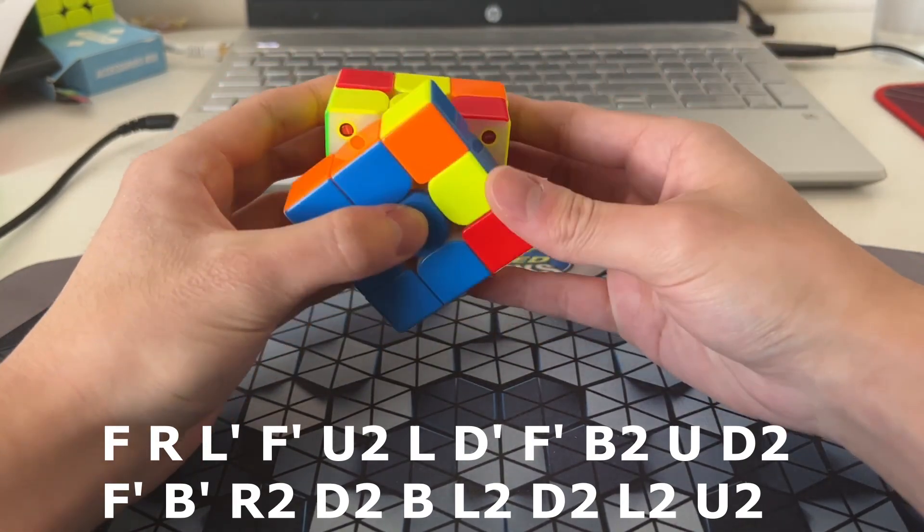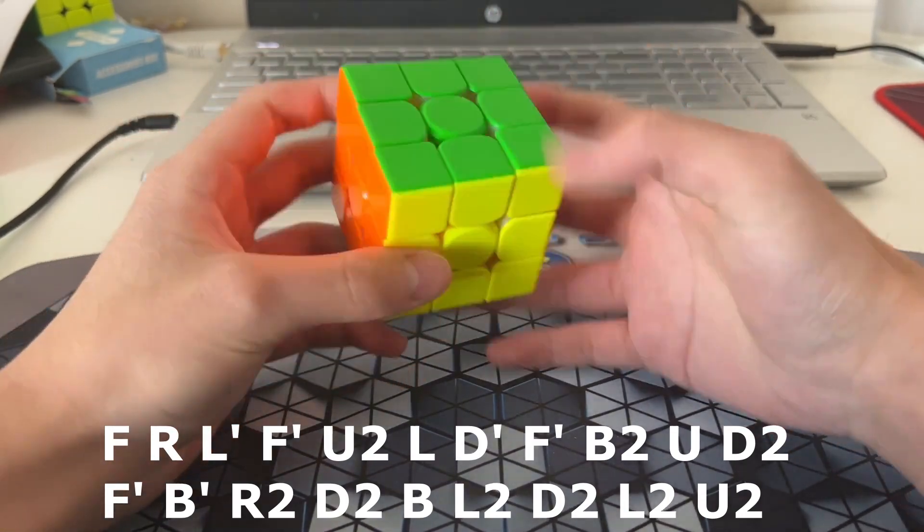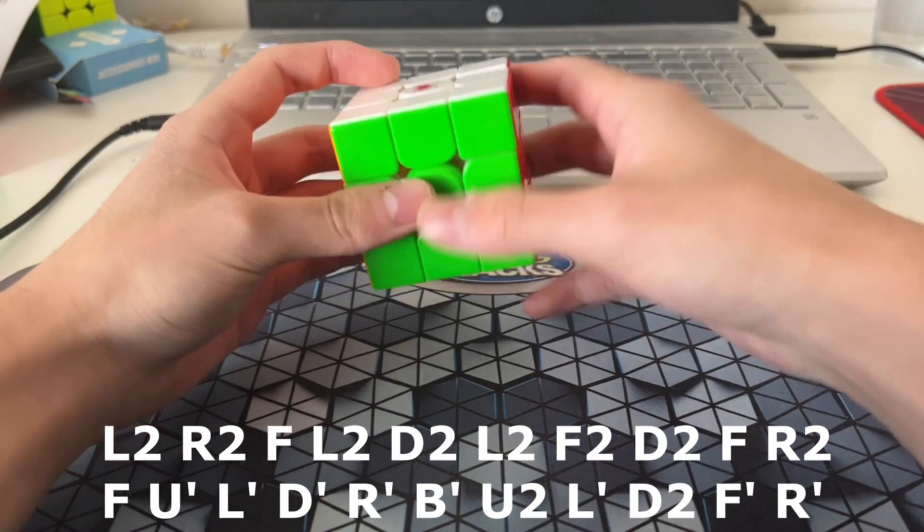And then now, here, I'll do EO into ZB, and that's just a really easy case to predict which DB you're going to get. Okay, solve two.